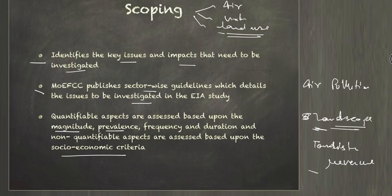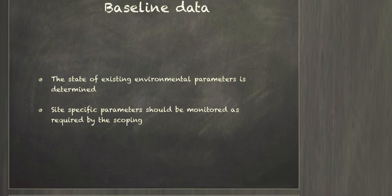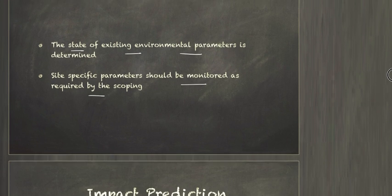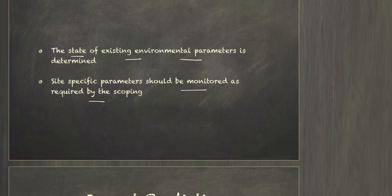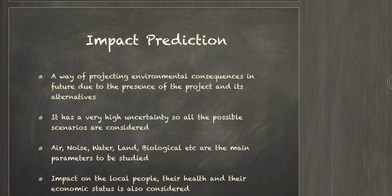After scoping, we collect baseline data — this means recording the existing conditions of all relevant environmental parameters before construction of the project. Site-specific parameters should be monitored as required by scoping. We will measure parameters like air quality, water quality, and land use before construction begins.